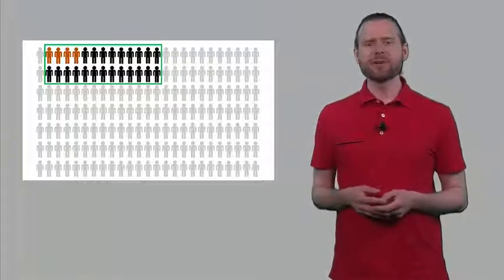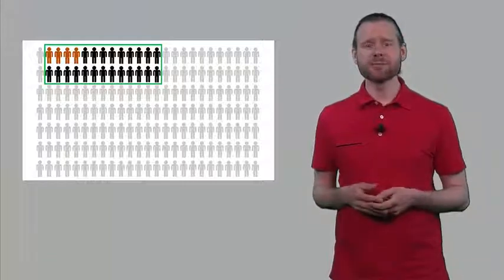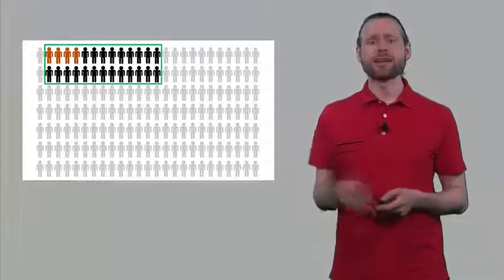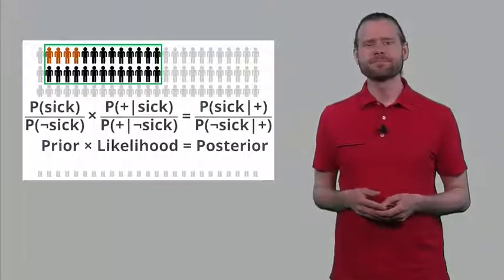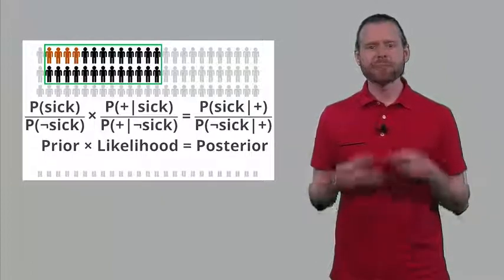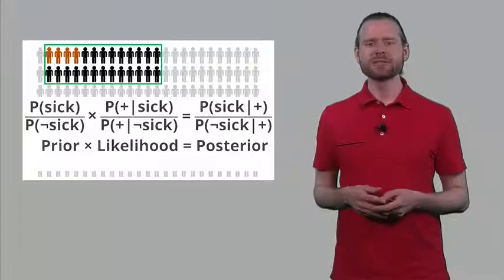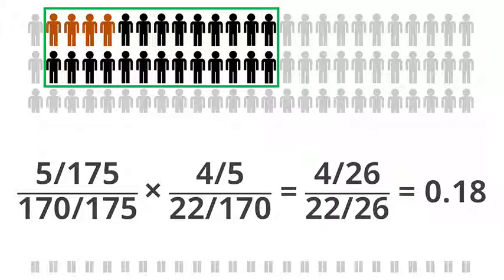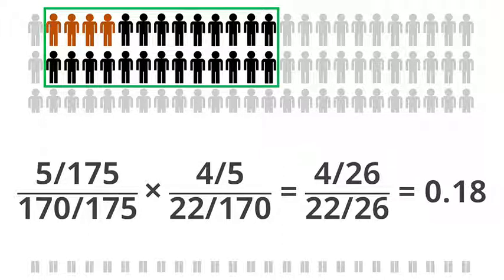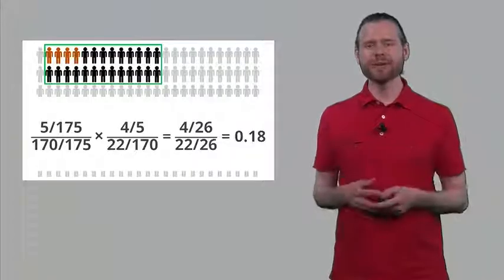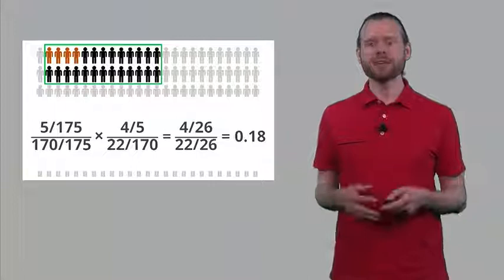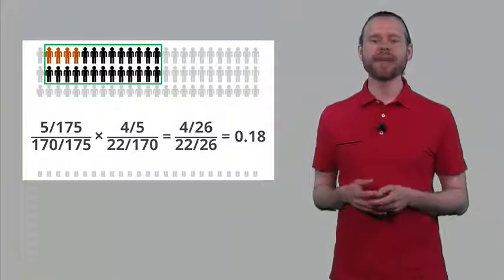Given the data we have observed, what is now the probability of actually being ill? We can see that this is the probability of being one of the red individuals divided by the probability of being one of the black individuals. We can formally quantify this: prior times likelihood equals the posterior distribution. In this case, we have 175 people on this slide, 5 of them were actually ill and 170 weren't. Then 4 out of 5 were correctly identified as sick, and 22 out of 170 were false positives. Combining this, the posterior probability is only about 18% that you are actually ill.